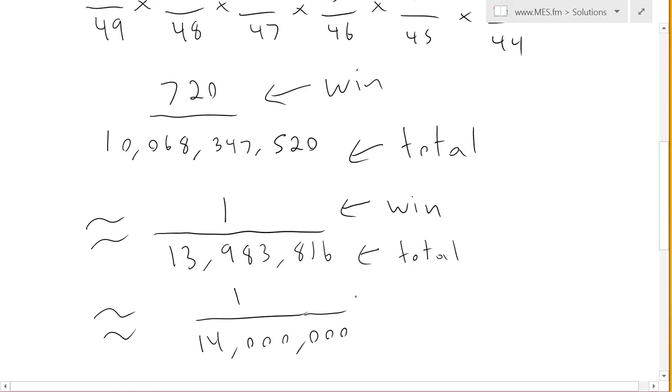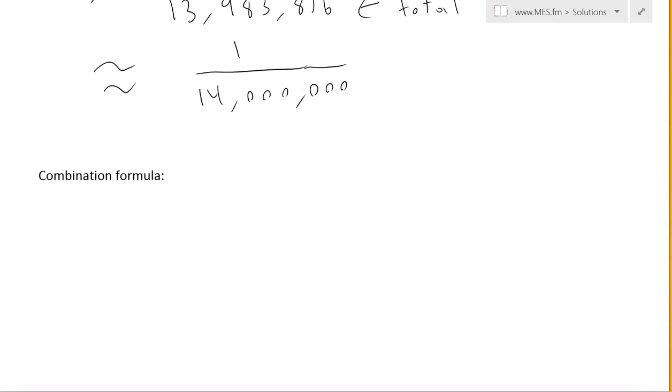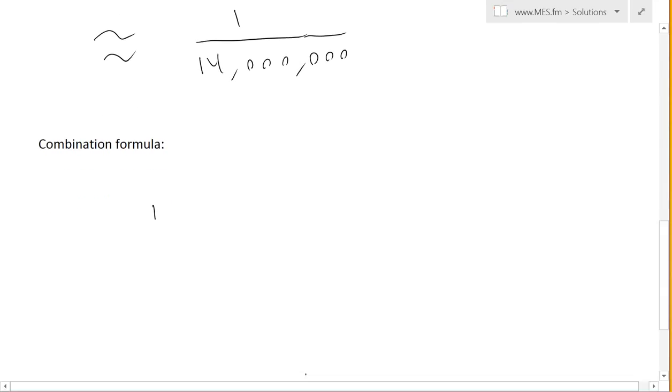There's actually a really simple way of doing this. I'm going to go through that really quick here. So, on your calculator, there's actually a button that says nCr. This is a combination formula.